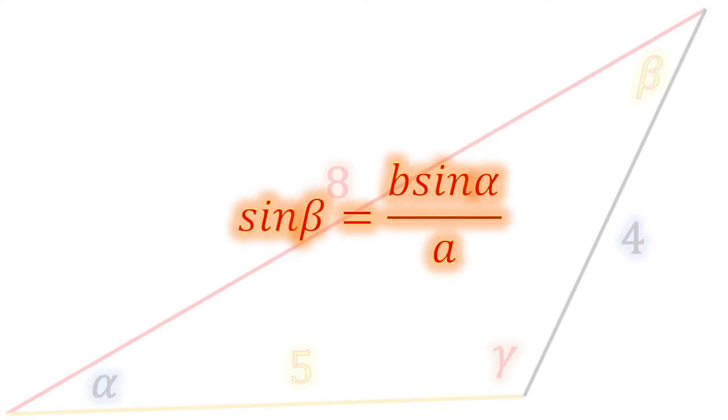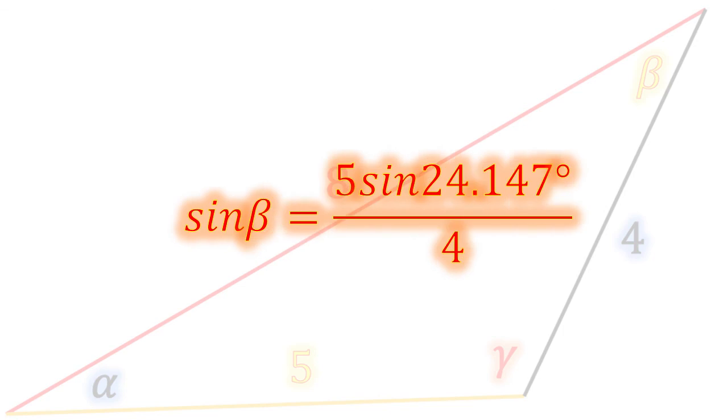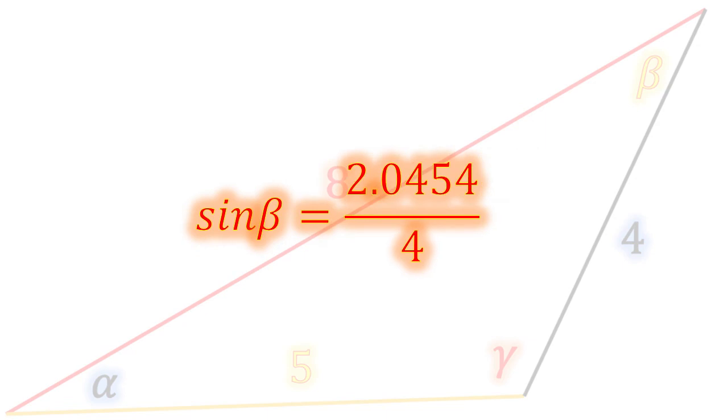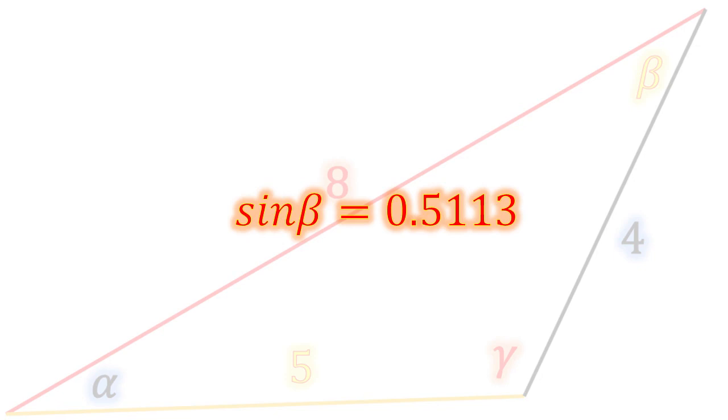And so the sine of beta is equal to leg B, which we found was 5, times the sine of alpha divided by leg A, which was 4. I'm going to go ahead and add those values in there. 5 sine 24.147 degrees over 4 gives us 5 times 0.4091 over 4, and multiply it by 5 is 2.0454 over 4. So the sine of beta becomes 0.5113. The arc sine of that is 30.7535 degrees.